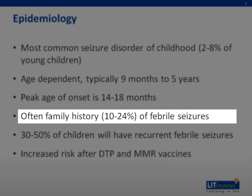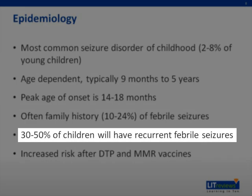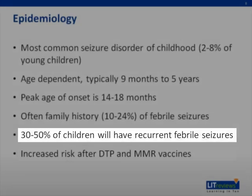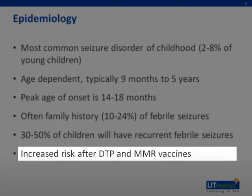Additionally, 4% of patients with febrile seizures will have a family history of epilepsy. Between 30% and 50% of patients will have recurrent febrile seizures during subsequent febrile illnesses. Risk factors for the recurrence of febrile seizures will be discussed shortly. There is also an increased risk for febrile seizures after DTP and MMR vaccines. The increased risk with DTP was on the day of vaccination, while the increased risk after MMR was 8 to 14 days after vaccination.